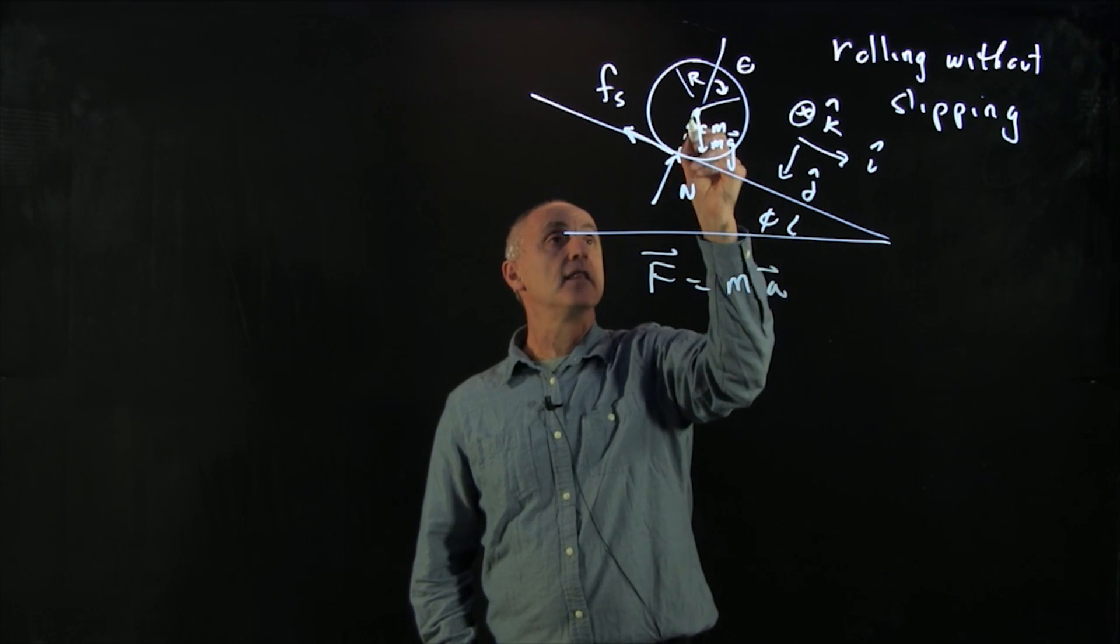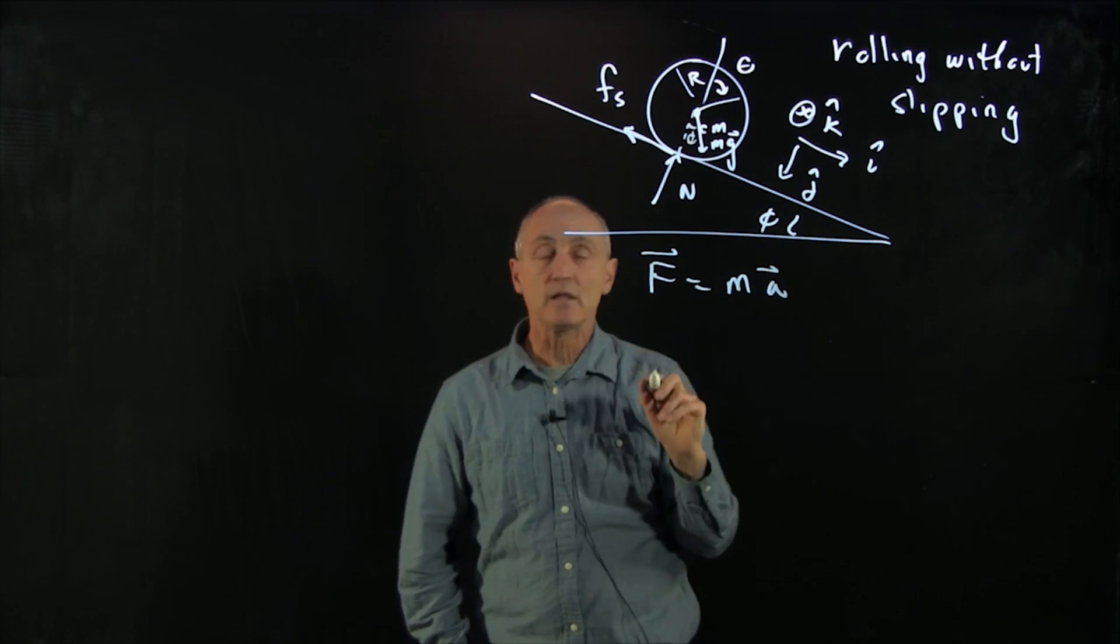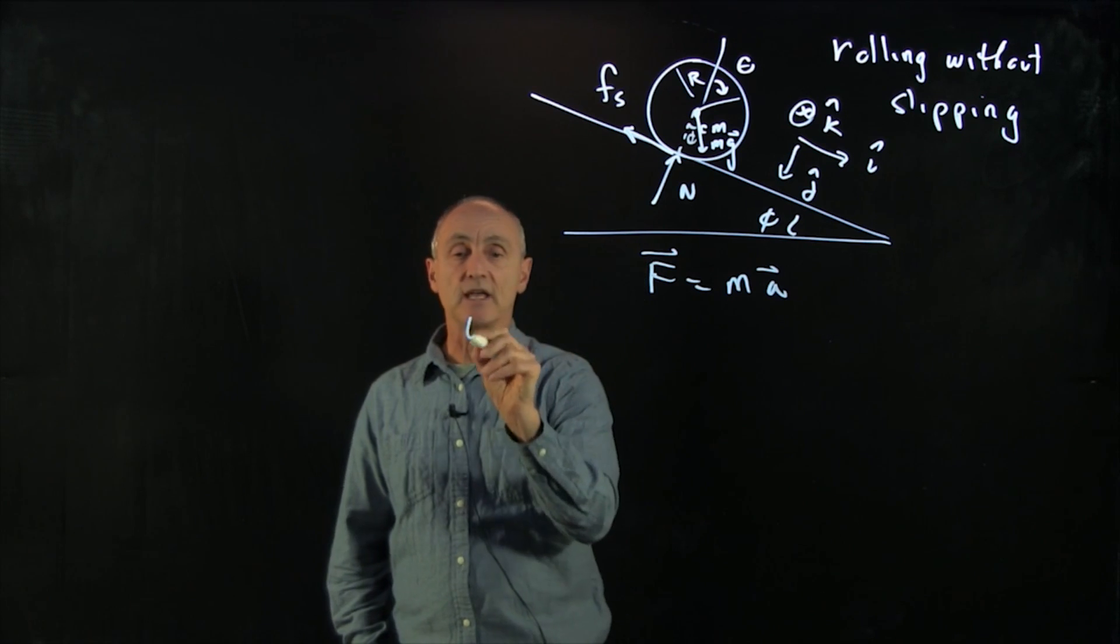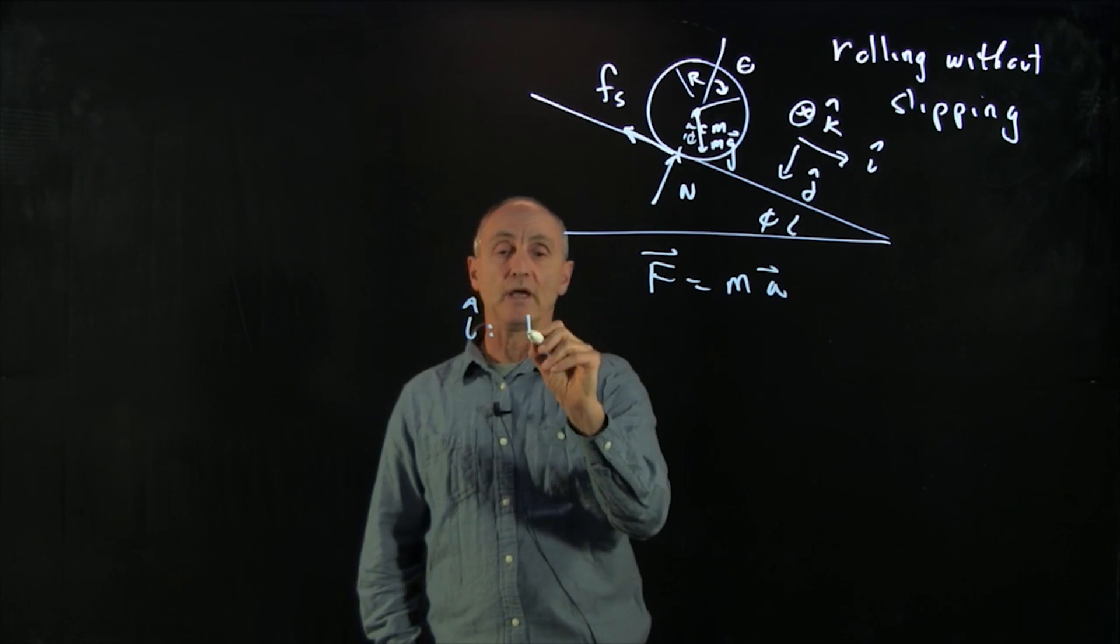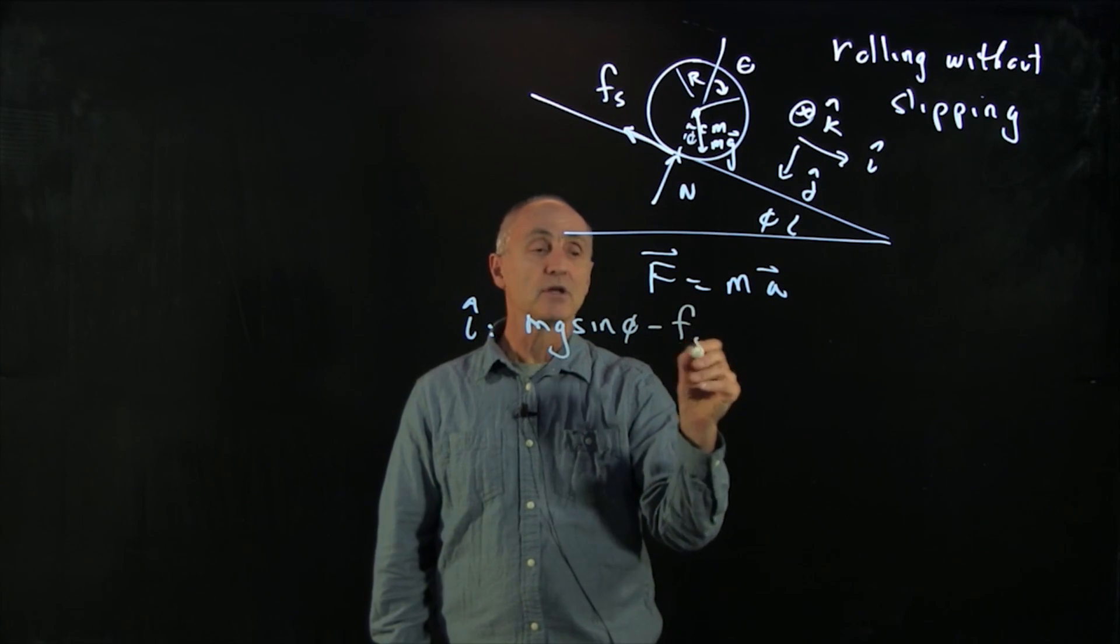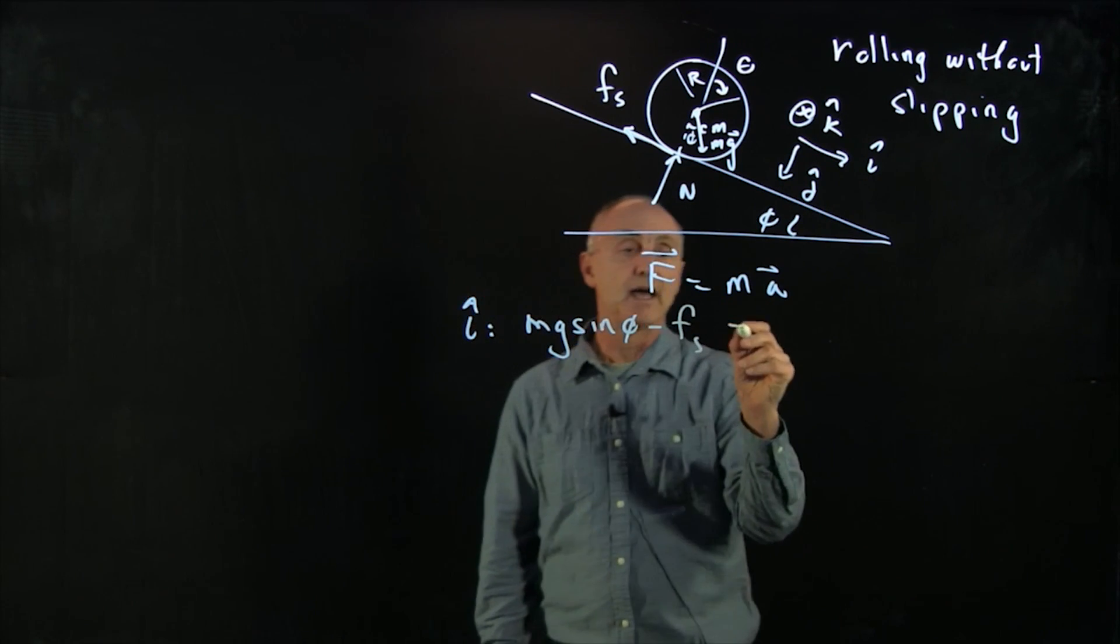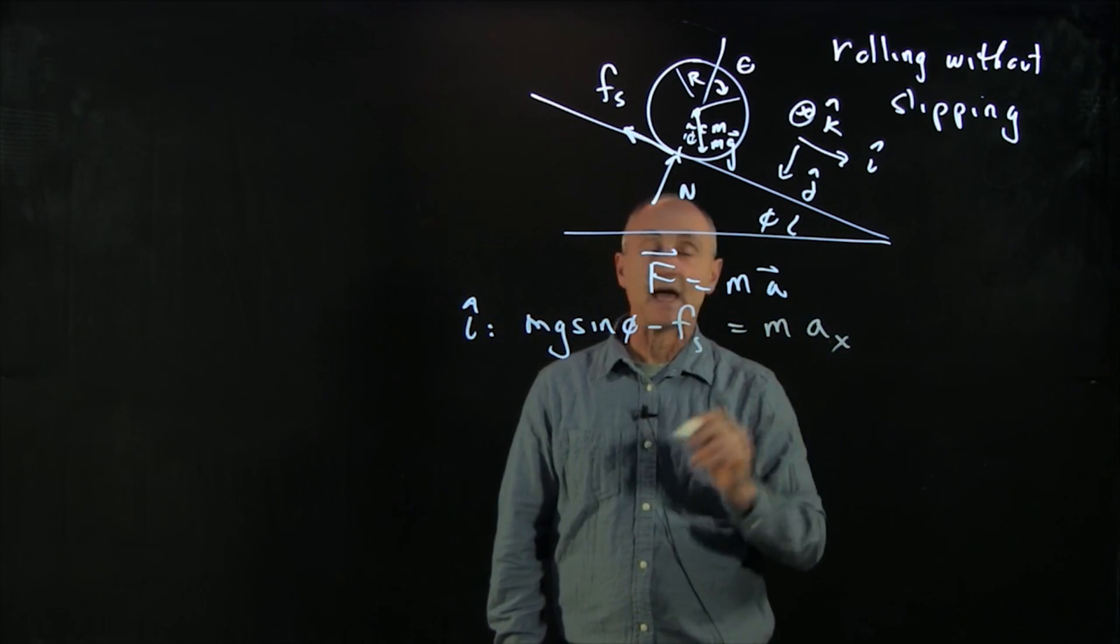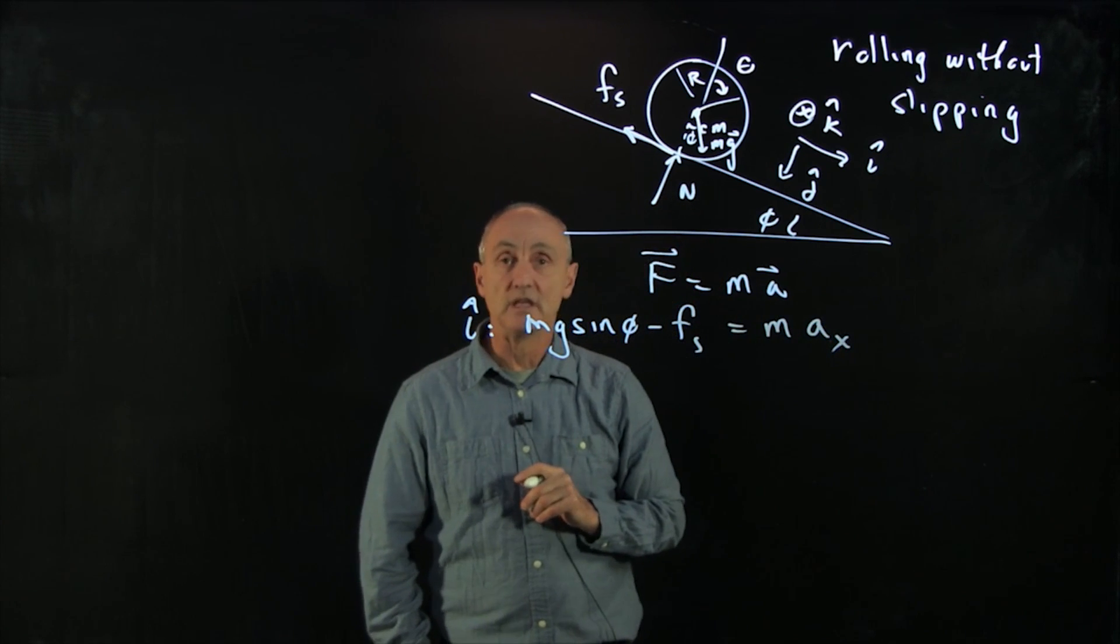Now, if this is the angle phi, then that's the angle phi as well. And so our forces in the i hat direction, we have mg sine phi minus the friction force, and that's equal to the x component of the acceleration.